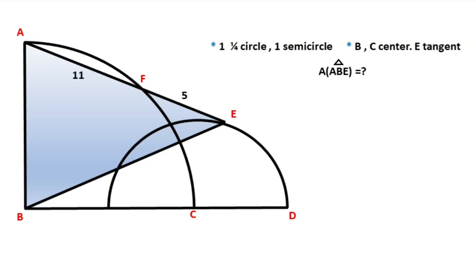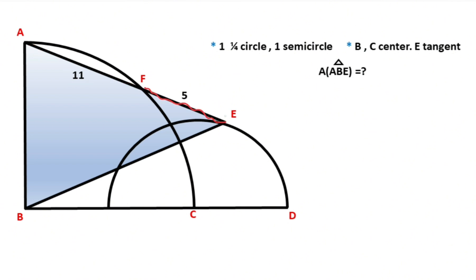Hello everyone. In this video we have one quarter circle, one semicircle. Point B is the center of the quarter circle and point C is the center of the semicircle. Point E is the tangent point, and this length is given as 11. Here is given 5. The question is: what is the area of triangle ABE?